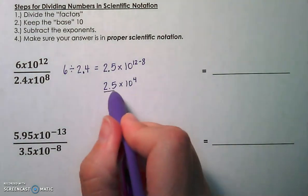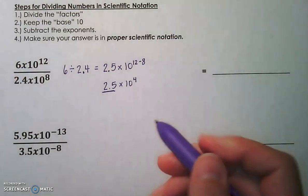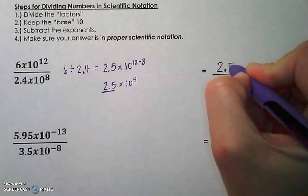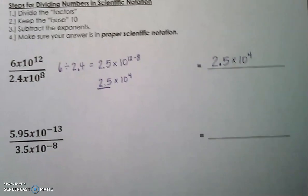Double check your final answer. Is this factor a value between 1 and 10, greater than 1, less than 10? That's proper scientific notation. And 2.5 is a value between 1 and 10, so our final answer is 2.5 times 10 to the fourth power. Let's look at the next example.